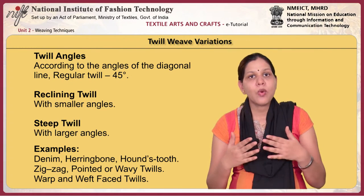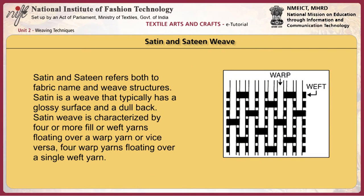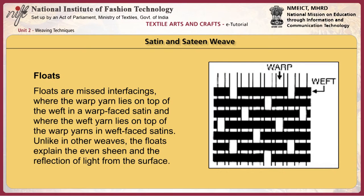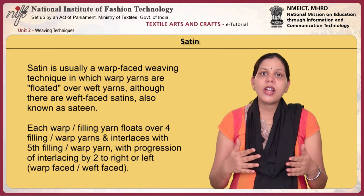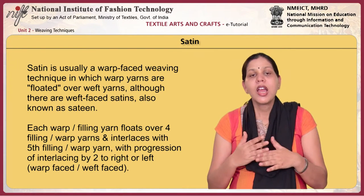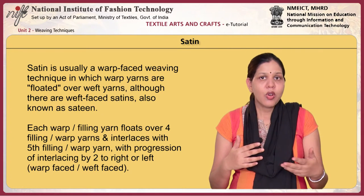Twills are also described as warp and weft faced twills. Satin and sateen — both terms refer to fabric names and weave structures. Satin is a weave that typically has a glossy surface and a dull back. This weave is characterized by 4 or more fill or weft yarns floating over a warp yarn, or vice versa — that is, 4 warp yarns floating over a single weft yarn. Floats are missed interlacings where the warp yarn lies on top of the weft in a warp-faced satin, and where the weft yarn lies on top of the warp yarns in weft-faced satins. Unlike other weaves, the floats explain the even sheen and the reflection of light from the surface. Satin is usually a warp-faced weaving technique, although there are weft-faced satins also known as sateen.